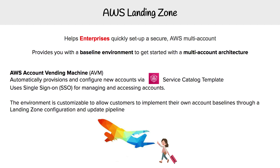The idea is that you have these companies, and AWS recommends that you run in multi-account, but the company itself doesn't know how best to set up multi-account and make sure it's secure and good for future growth. Landing Zone is basically that setup done for you. The way this all works is through the AWS Account Vending Machine, also known as AVM, which automatically provisions and configures new accounts via a Service Catalog template. The way you access these accounts is using Single Sign-On. The environments are customizable to allow customers to implement their own account baselines through a landing zone configuration and update pipeline.